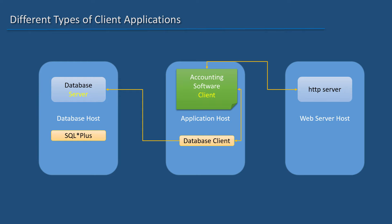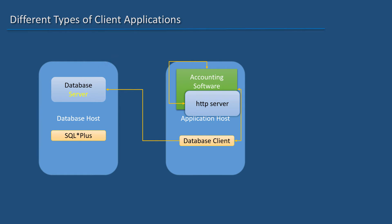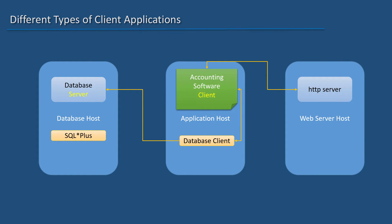These days, it is common to have a 3-tier architecture where there will be a web server facing the users. The web server will interact with the application software and serve the web-enabled portion of the application as web pages. The application server will interact with the database server. In some cases, the application host runs both the application software as well as the web server software, which is the HTTP server. Since I am calling the accounting software as a client, let me address this database client piece as database driver.